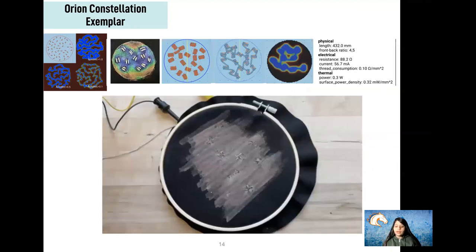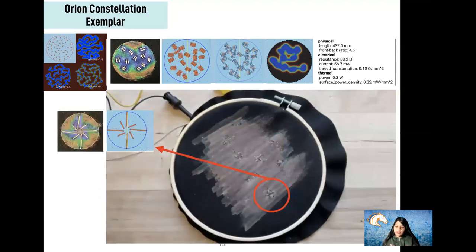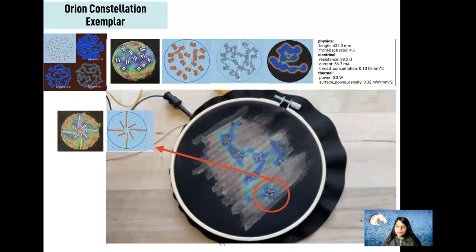We used it to create an Orion constellation where the thread lines on the back showcase the lines of the constellation on the top side. For the big stars, we used a modified star stitch. Traditionally, it's not possible to execute this without shorting the stitch. However, with our modification, we were able to create a large resistive heater that appropriately shows the stars and is also safe from shorts.